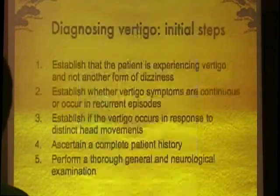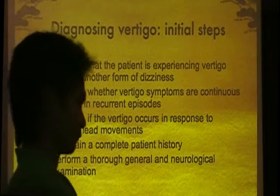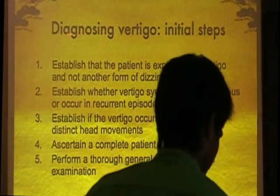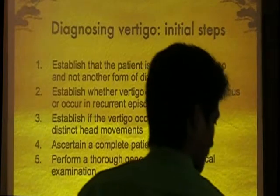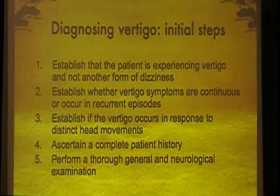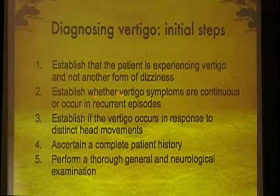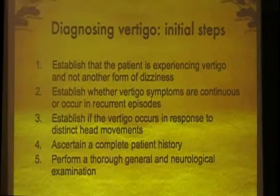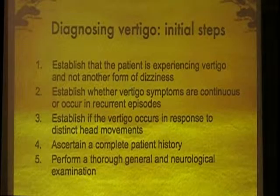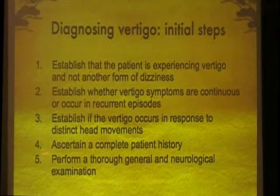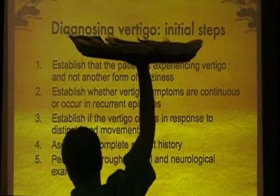So what is the initial step in evaluating vertigo? First, establish that the patient is experiencing vertigo, which means a feeling of spinning and not just dizziness. Establish whether the vertigo is confined to a single episode or occurs in recurrent episodes. Establish if the vertigo occurs in response to distinct head movements. Obtain a complete patient history and perform a thorough general neurologic examination.